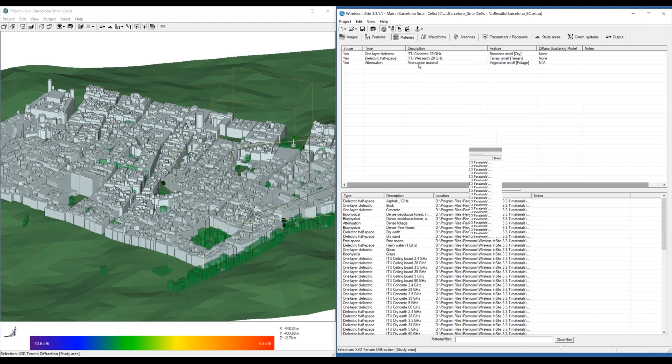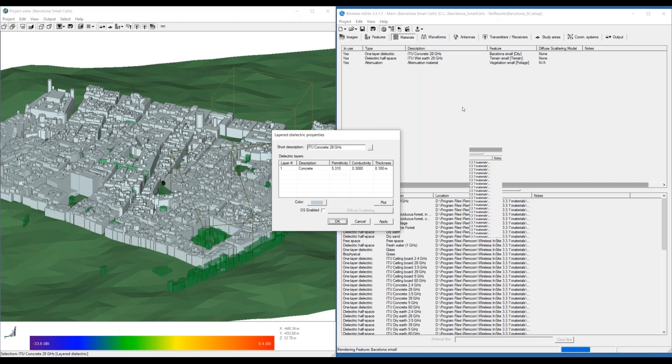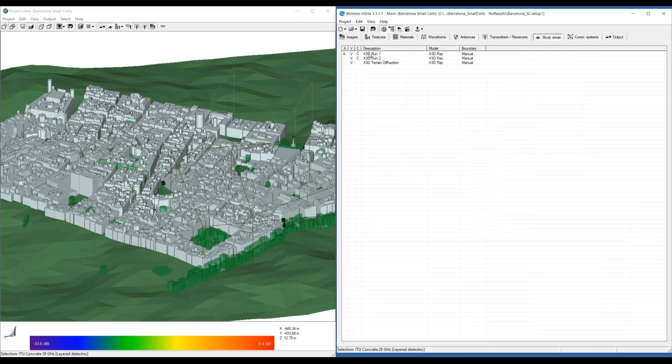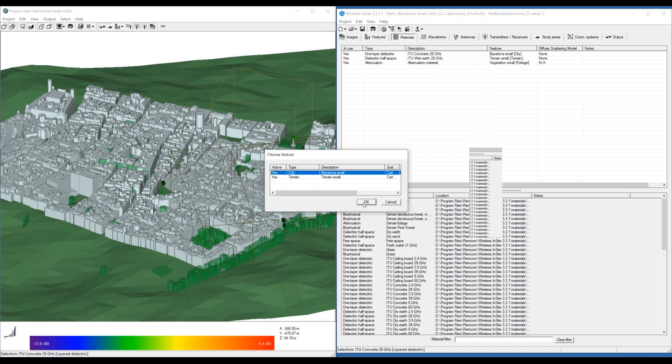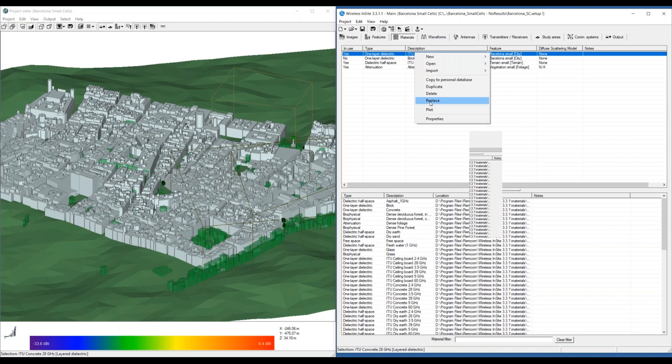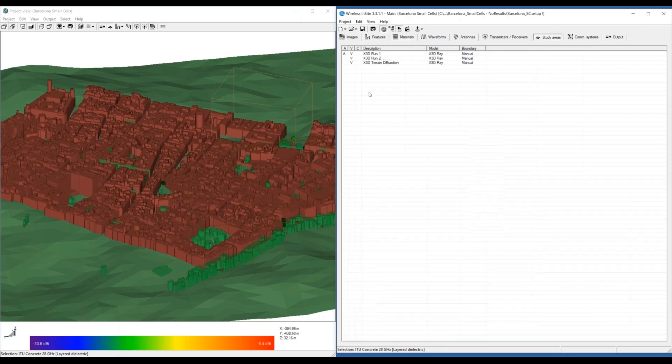As I mentioned, there are some ways to modify material properties that do not invalidate the cache. So an example of that would be to come in here and say change the conductivity to a different value. And we can see that the cache is still listed as valid on the study areas tab. Now, if we come in here and say add a new material entirely, we can see here in the project view on the left that the material has now been changed to brick for the entirety of the city. Now the cache is invalid.